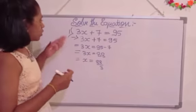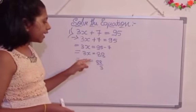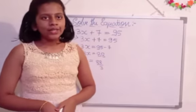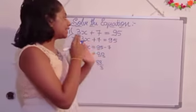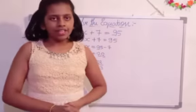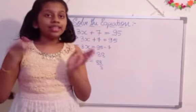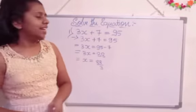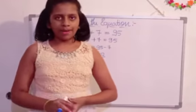Got it? So in the place of x we are going to write 88 by 3 there. So then if we do the sum we get the answer 95. So you can verify it by doing the side work. Got it? So the value of x is x is equal to 88 by 3.